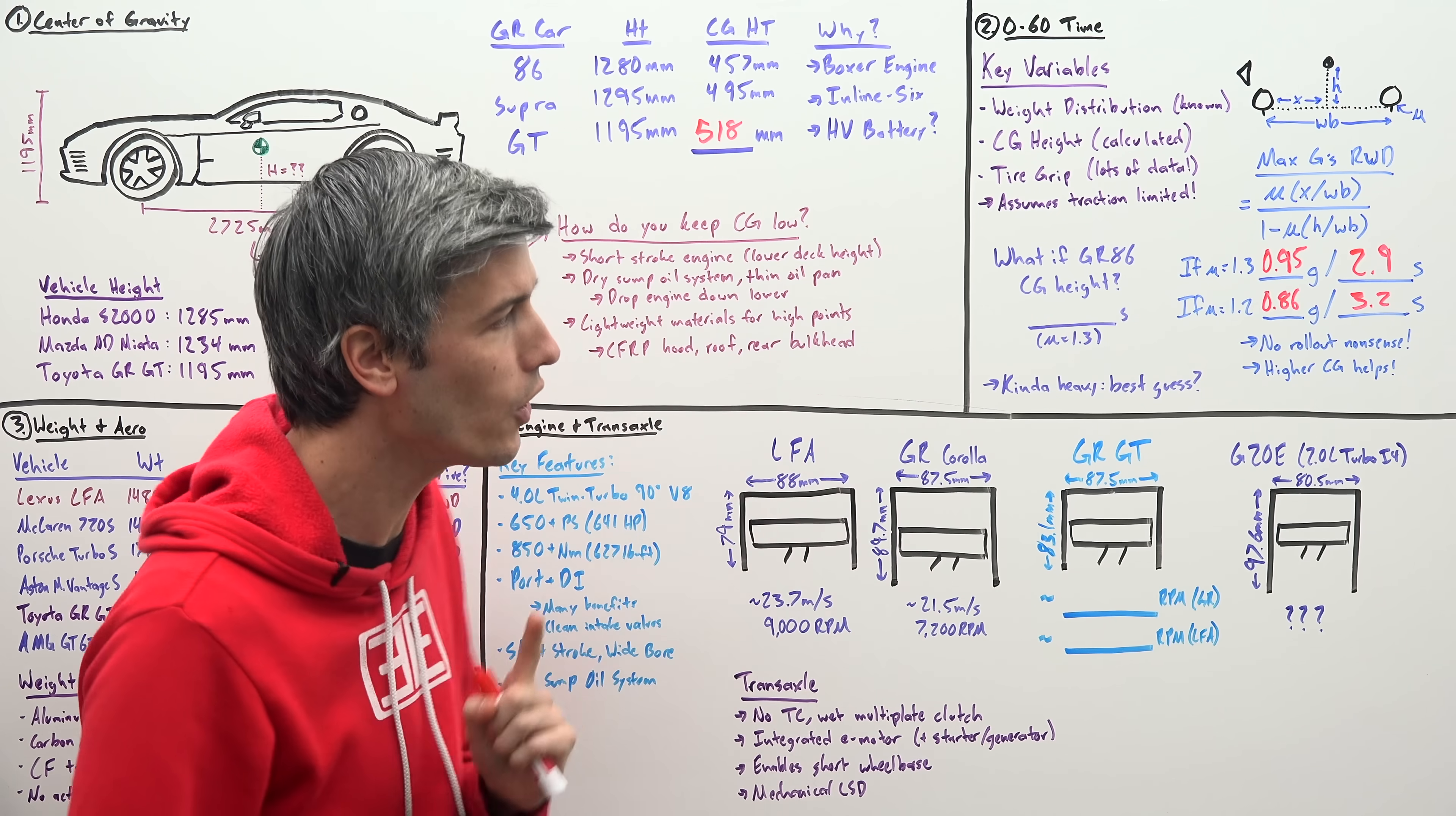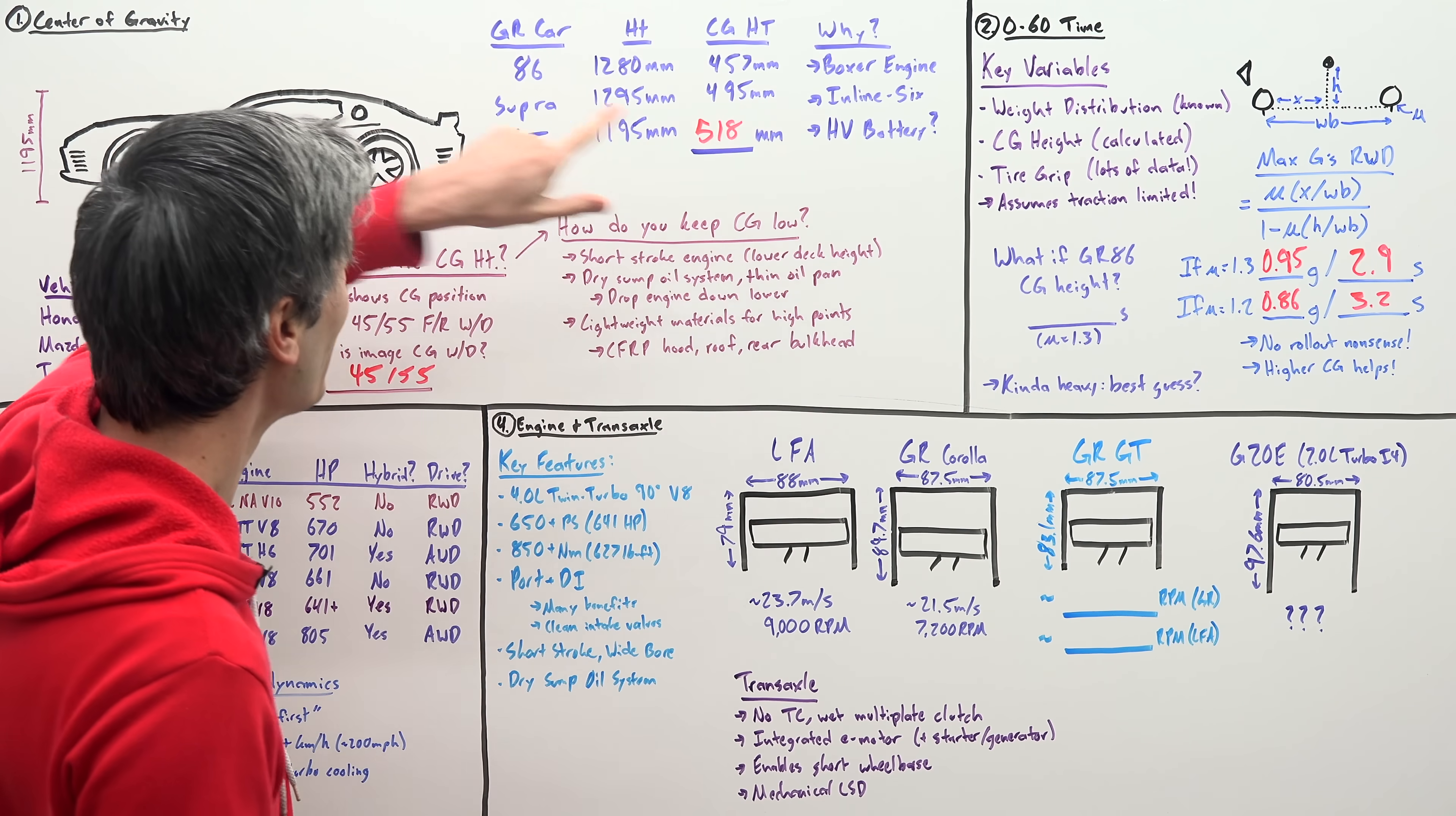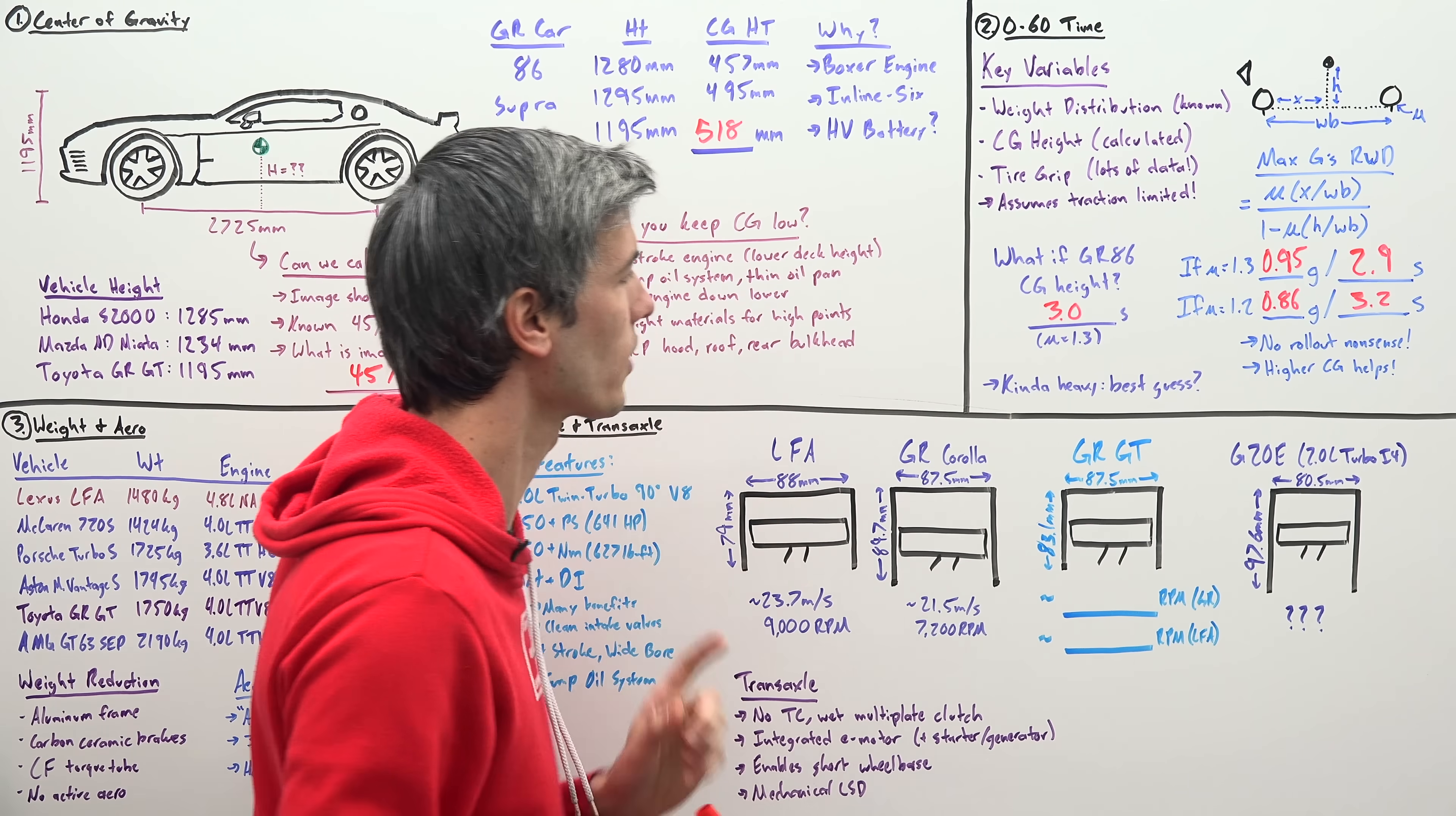And something that's interesting to note is that having that higher center of gravity versus like the 86 and the Supra actually improves the 0 to 60 time because it means you have more weight transfer to that rear tire, which is putting down the power. So just as an example, if it were to have the same center of gravity height as the GR86 and we have that same grip of 1.3, well, then we are going to get a 0 to 60 time of about 3.0 seconds. So a tenth of a second, just from a small difference in where that center of gravity is. So that's kind of neat.